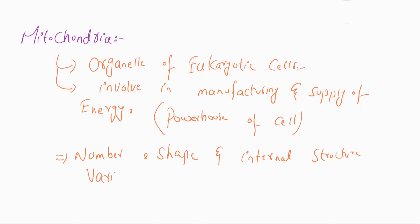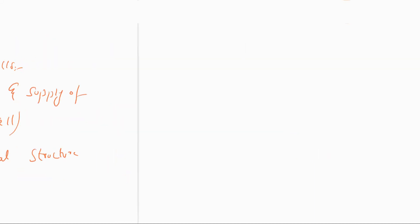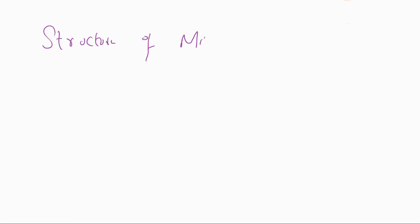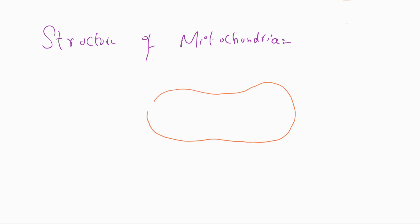The number, shape, and structure of mitochondria varies. When we see the structure of mitochondria, it is composed of two membranes. One is the outer membrane, which is a smooth membrane — this is called the outer membrane.